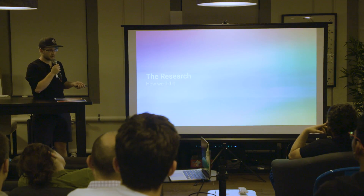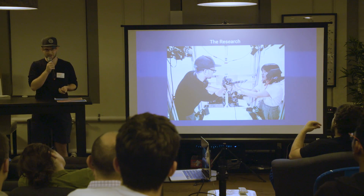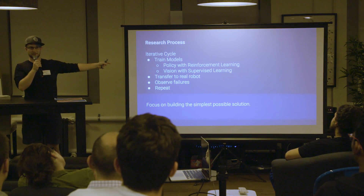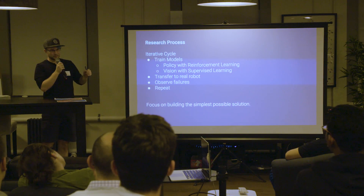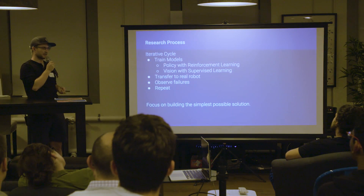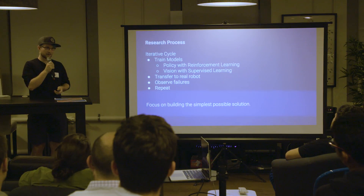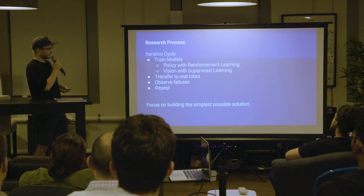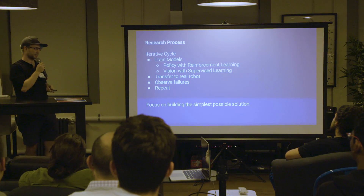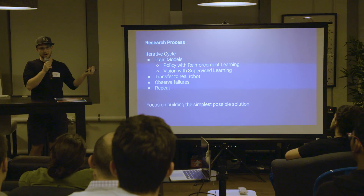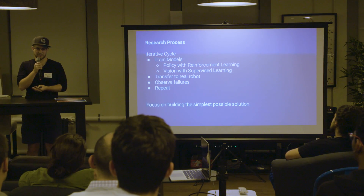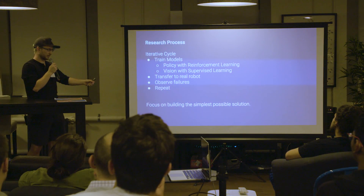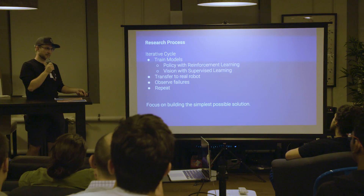The process involved a lot of dealing with robot hands — it's not all training models. We did an iterative cycle over and over for 12 months that got faster and faster. It used to take more than a month; now we can do it in a few days. We train a new reinforcement learning policy and a new vision model, try running it on the real robot, observe how it fails, then try to improve it and repeat.